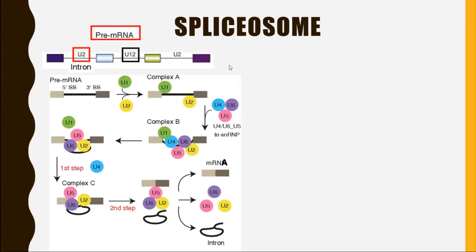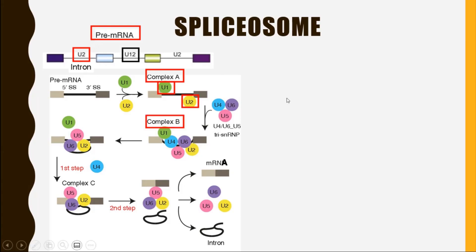This process shows the spliceosome in action. The pre-mRNA is shown, with the black line representing the intron to be removed. U1 and U2 come and attach to the 5' end and 3' end of the pre-mRNA, making a complex called Complex A. Then U4, U6, and U5 attach to the intron to form Complex B. U6 then takes the place of U1, and U1 and U4 leave, forming Complex C.